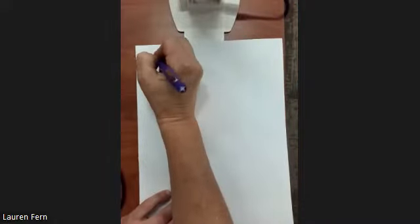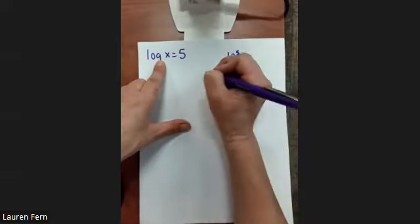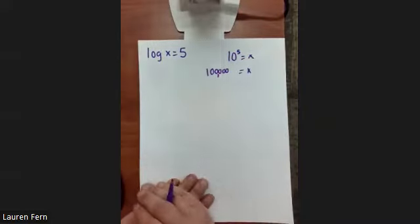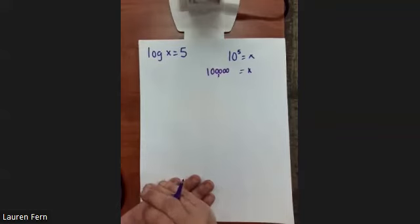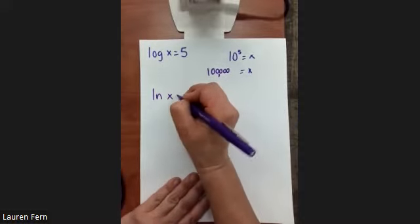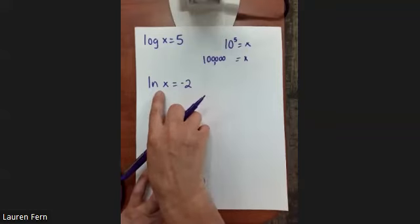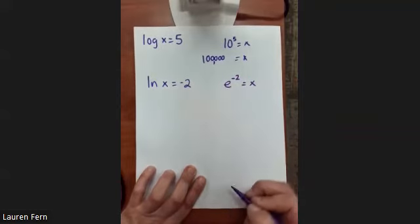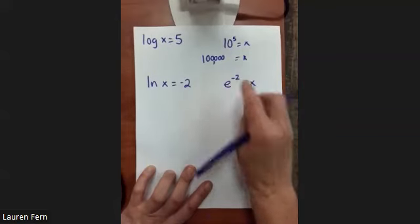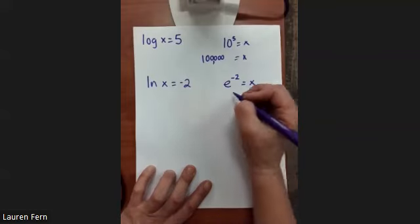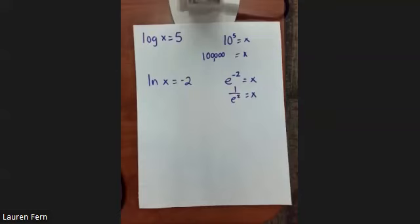What if log x = 5? There's no base written, so by default the base is 10. We get 10^5 = x, which is 100,000. What about ln x = −2? By default the base is e, so e^(−2) = x, which we write as 1/e².